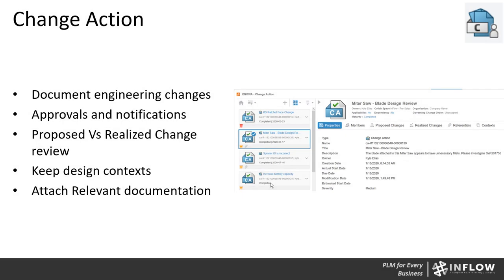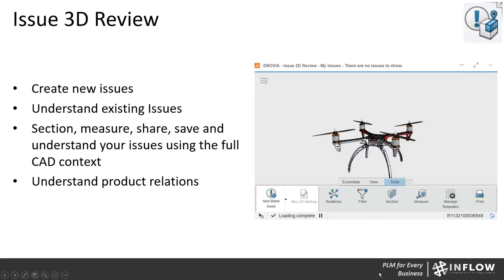In the Realized Changes tab, once you've worked on the action and created revisions, those changes will appear here. The Context tab holds anything in context — markups, CAD parts, emails. Everything is completed once the change action is approved through the maturity cycle. Those two apps go hand in hand. Since we're on the topic of issues and changes, let's talk about Issue 3D Review — a viewer application that lets you view 3D CAD attached to your issue management or change action app. You can section, measure, share, or create a new issue directly from a CAD part.